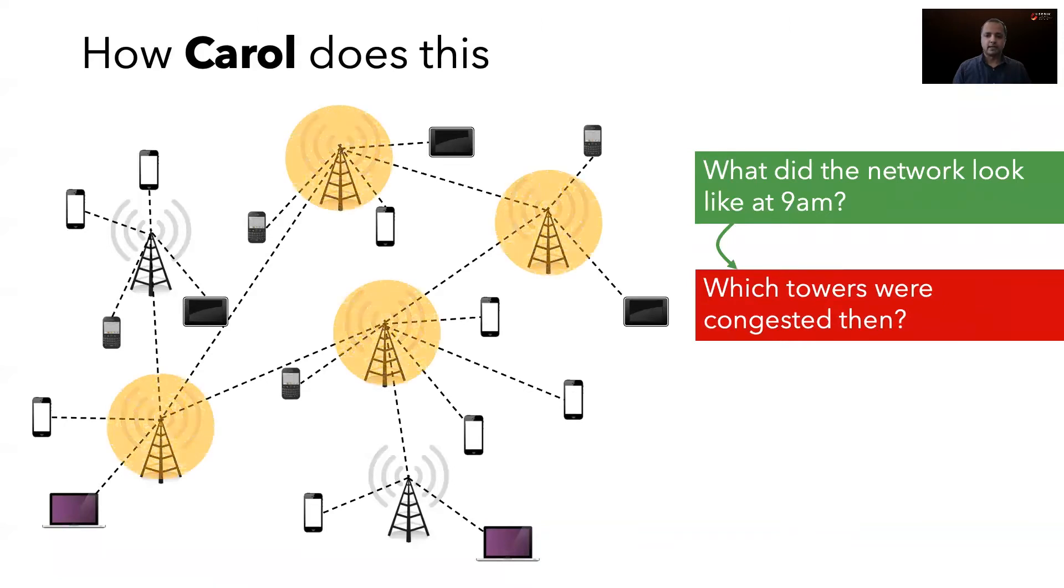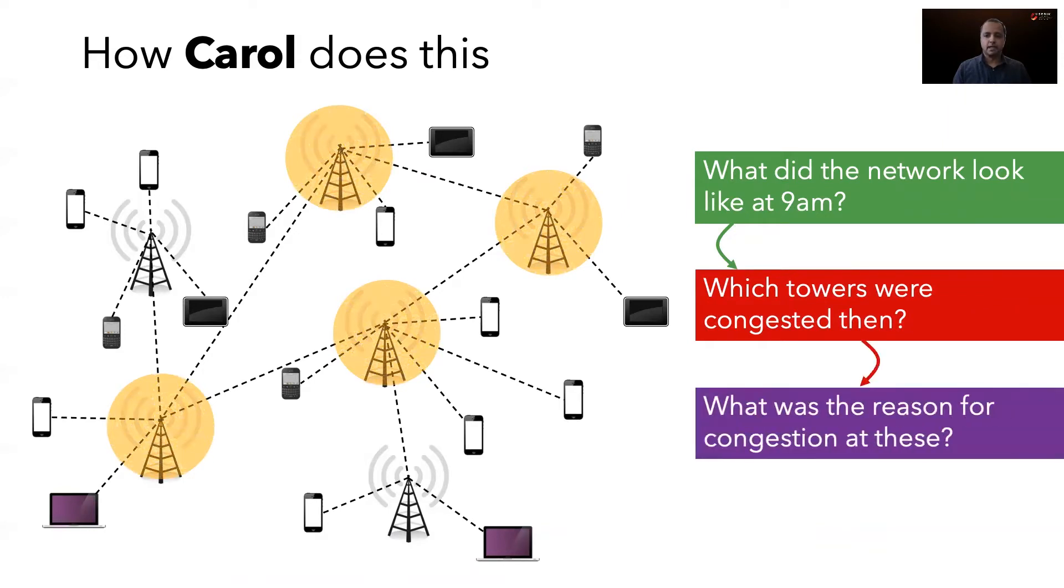The query result reveals that some towers were in fact congested. The next step in Carol's diagnosis is to understand why these towers were congested. For this, she might run some machine learning algorithm and interpret the results.